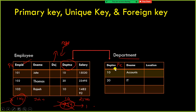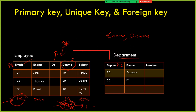The foreign key allows us to establish a relationship between two tables. In the department table, department number is the primary key, while in the employee table, department number is the foreign key. Using this foreign key we can create the relationship between the two tables. For example, if we want to display employee name and department name together in a report, we need to join these two tables using the common column — department number.